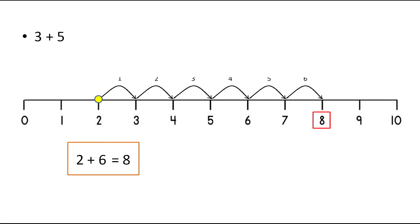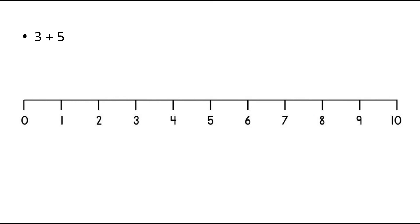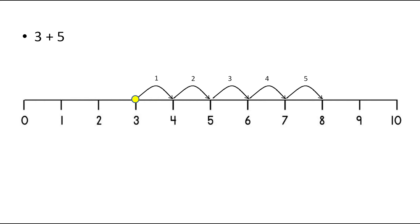The next one is 3 plus 5. Let's point out on the first number that is 3 and then we have to move 5 steps towards right. The first step will be on 4, the second step is on 5, the third step is on 6, the fourth step is on 7 and the fifth step is on 8. Therefore, as we have reached on 8, the answer of 3 plus 5 is 8.